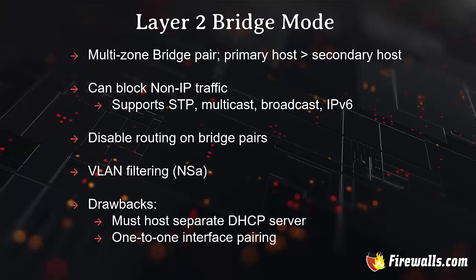The first interface bridge mode we'll talk about is layer 2 bridge mode. It is a bridge pair with a primary host and a secondary host, and these hosts can be in different zones. You can block non-IP traffic. Spanning tree protocol is supported, as well as multicast, broadcast, and IPv6. We can disable routing between the bridge pairs and filter VLANs. One drawback is that you can't use the firewall's internal DHCP server — you must host a separate DHCP server on your network. Another drawback is that you can only do this with one-to-one interface pairing.